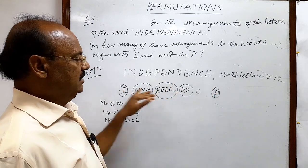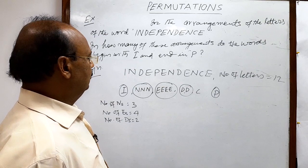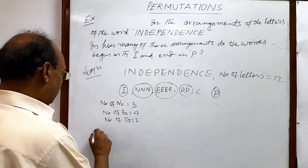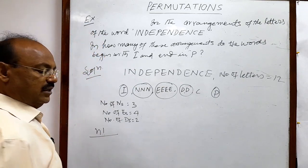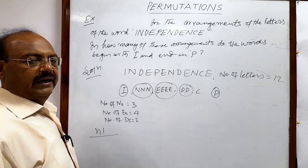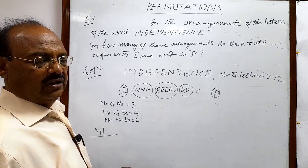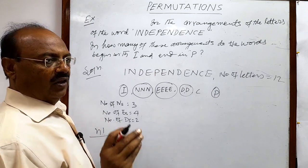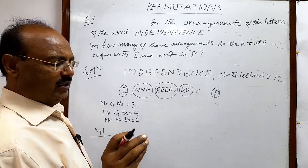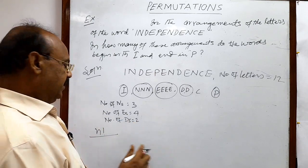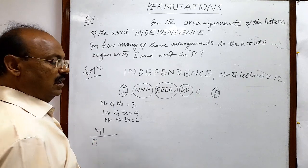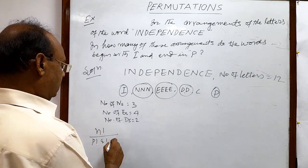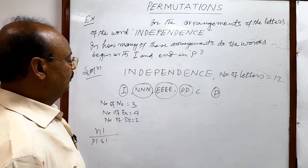So this kind of arrangement we have to make. We know a formula which is: total number of objects in factorial divided by factorial of the numbers of like objects. Suppose we have P alike objects, so we divide by P factorial. Again, if we have Q alike objects, that should be divided by Q factorial, and so on.